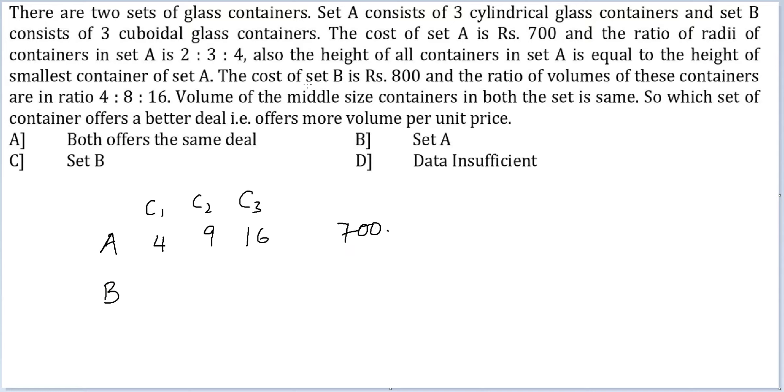For B, the cost of set B is 800 rupees and the ratio of volumes of these containers are in the ratio 4:8:16.